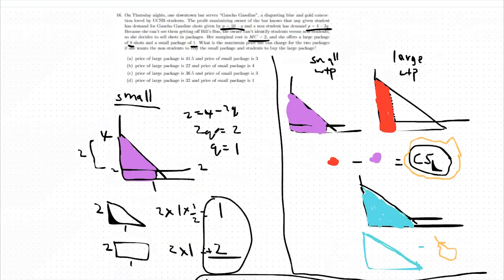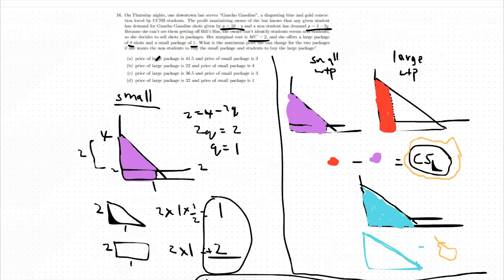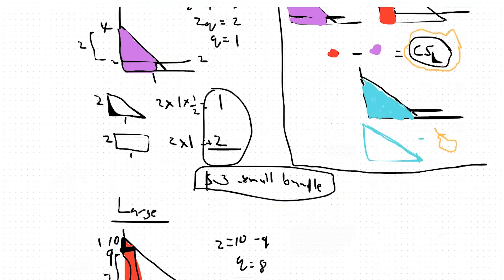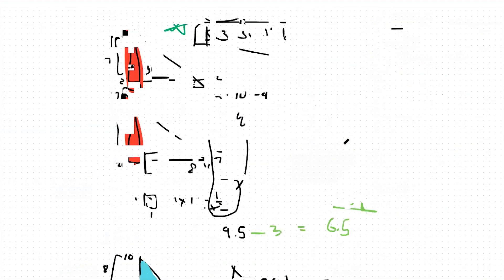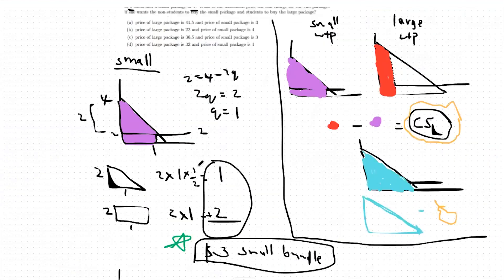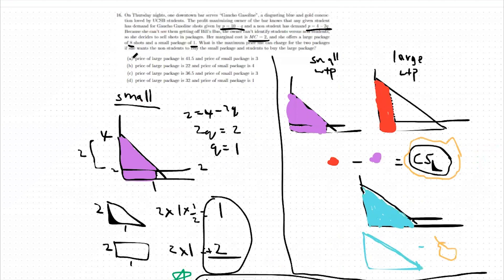The question asks for the price of both the small and large bundles. We found the small bundle is priced at $3, leaving option A or C. The large bundle is priced at $41.50, so the answer is option A.